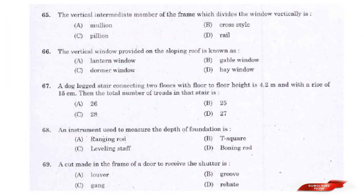Question: The vertical intermediate member of a frame which divides the window vertically — and: A vertical window provided on a sloping roof is known as — Answer: Option C — Dormer window.